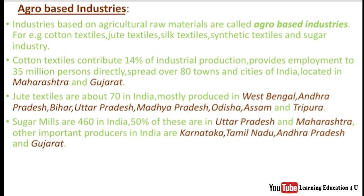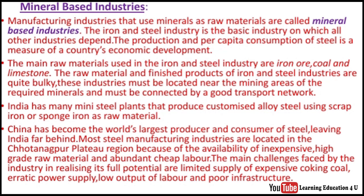The sugar industry has around 460 mills in India, with about 50% located in Uttar Pradesh. Other sugar-producing states in India include Karnataka, Tamil Nadu, and Gujarat. Next topic is mineral-based industries.